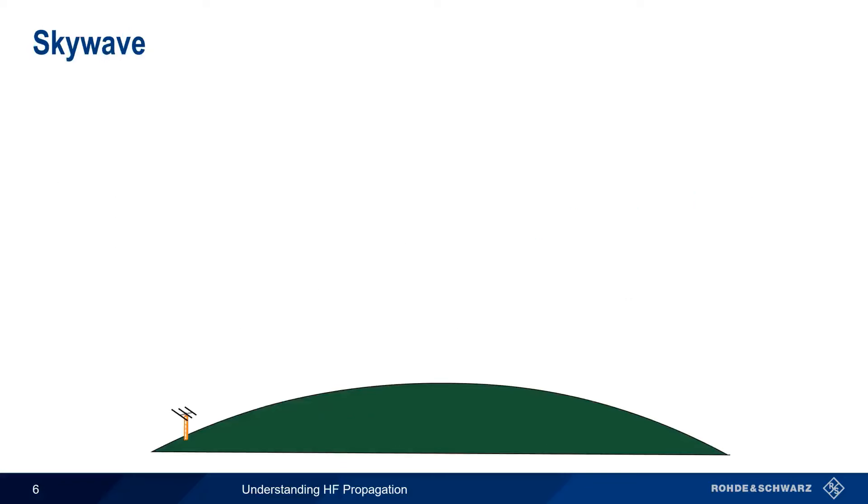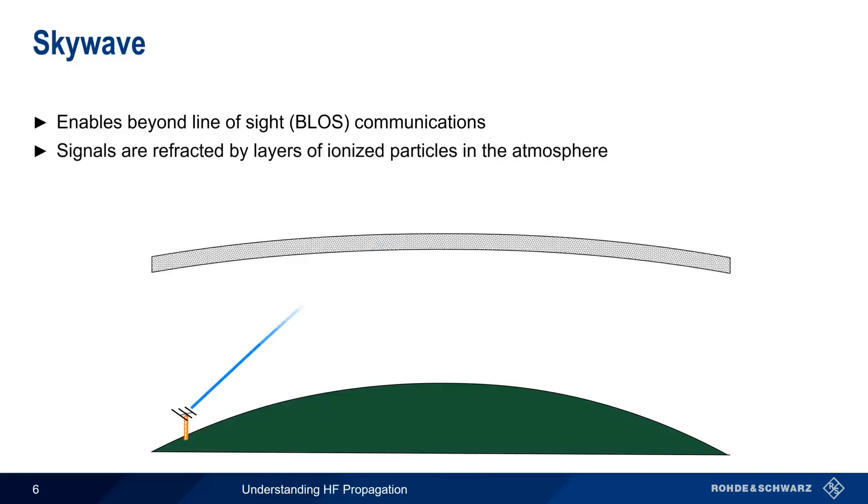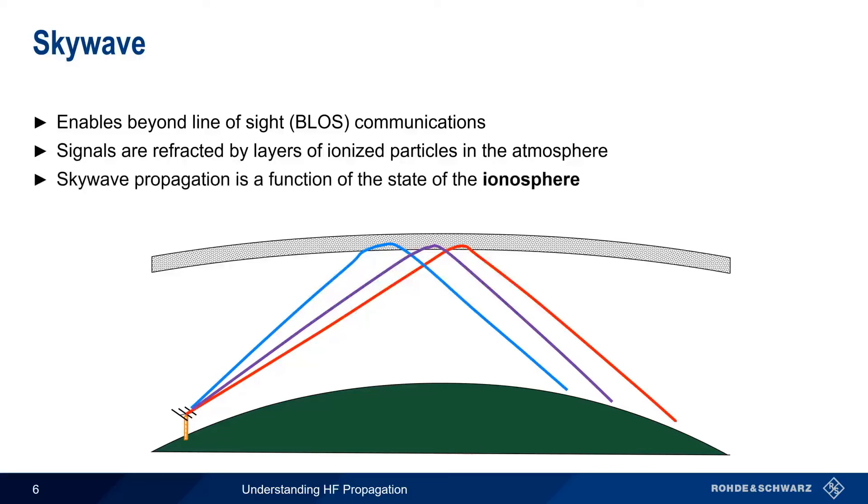One of the most important propagation modes of HF is SkyWave, because it's SkyWave propagation that enables beyond Line of Sight or Worldwide Communications. In SkyWave, layers of ionized particles in the upper atmosphere refract HF signals back towards the Earth, allowing communications over many thousands of kilometers. The distances that can be covered by different frequencies are almost entirely a function of the state of these layers of ionized particles, collectively referred to as the ionosphere.